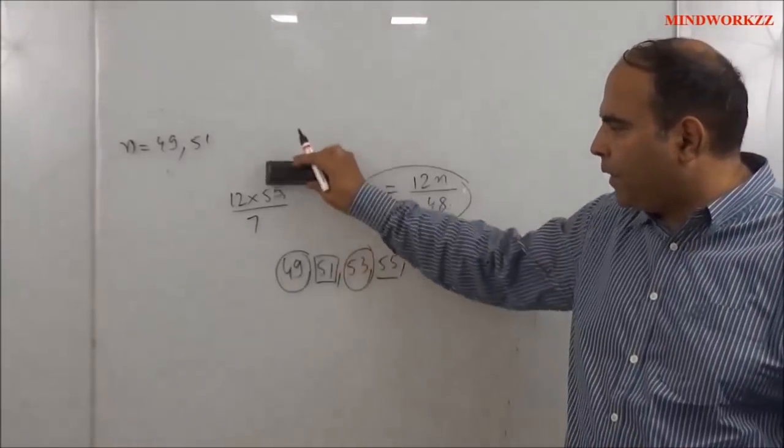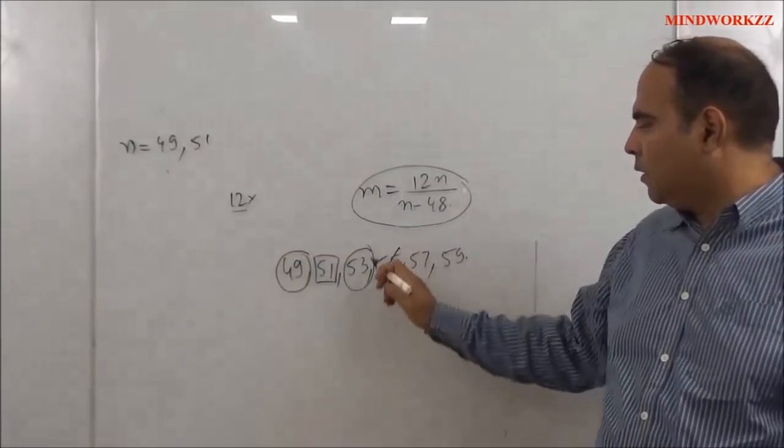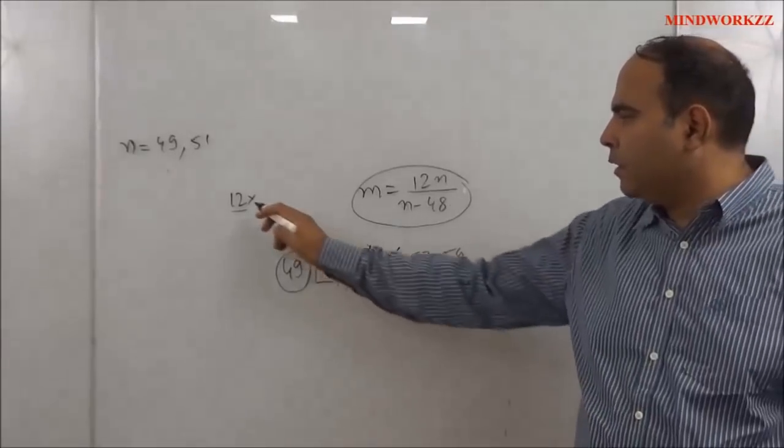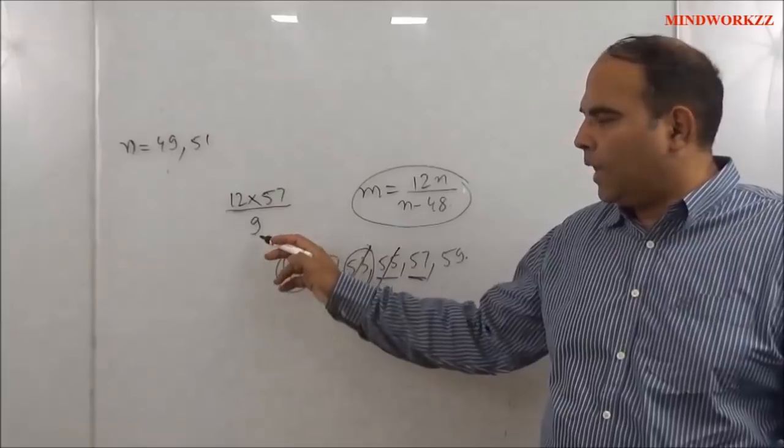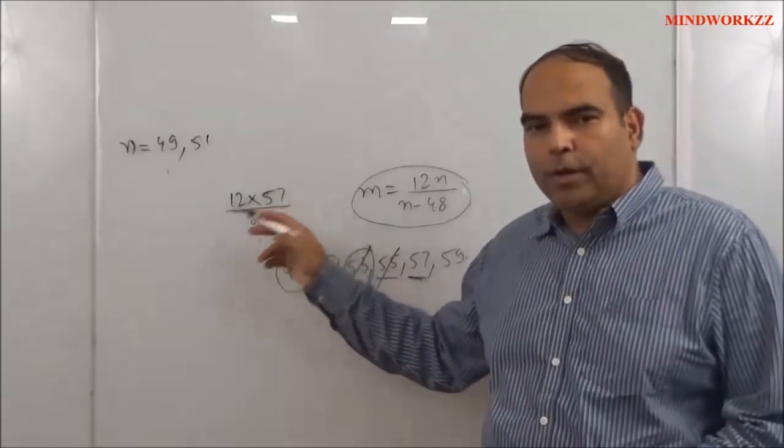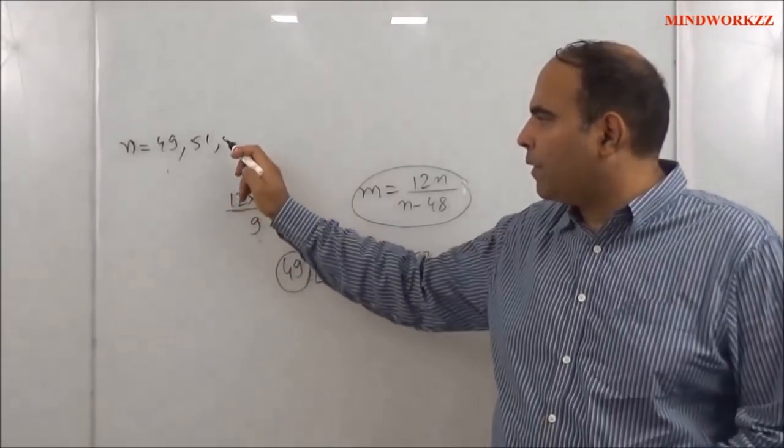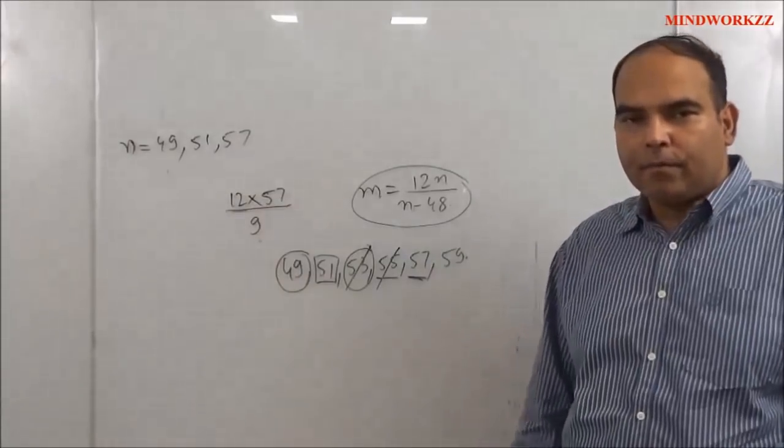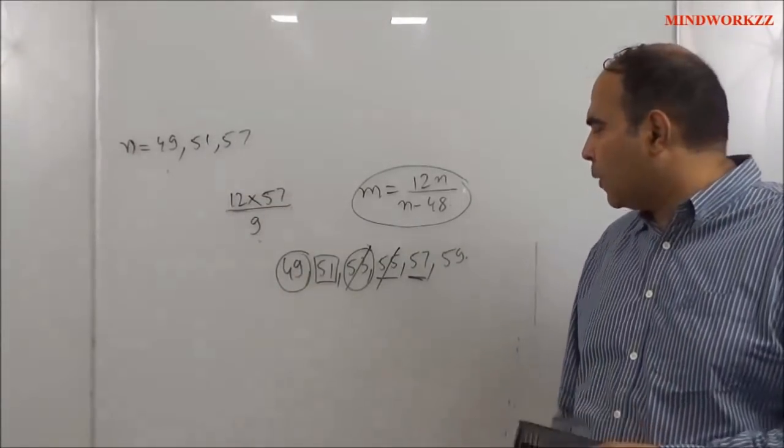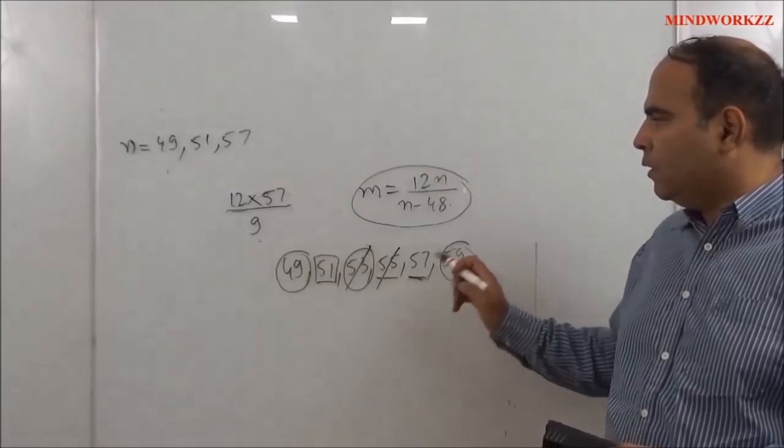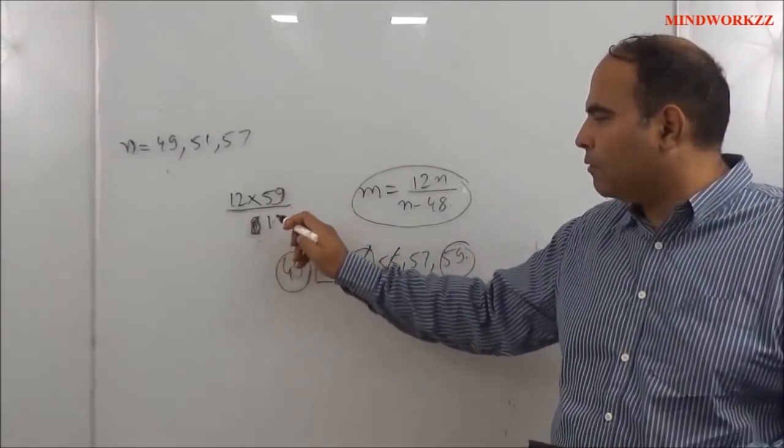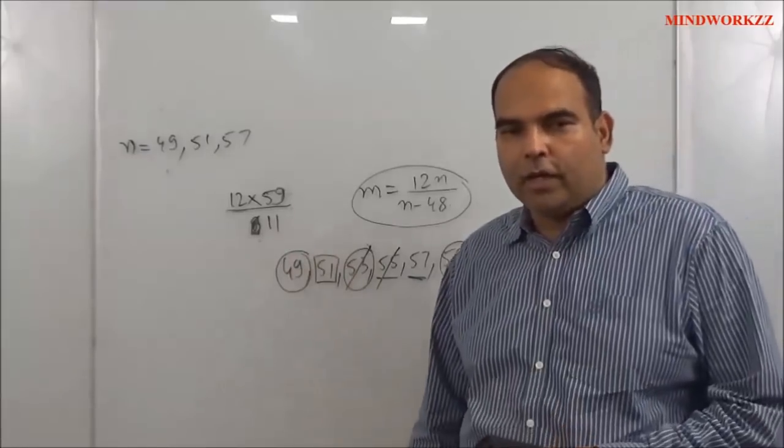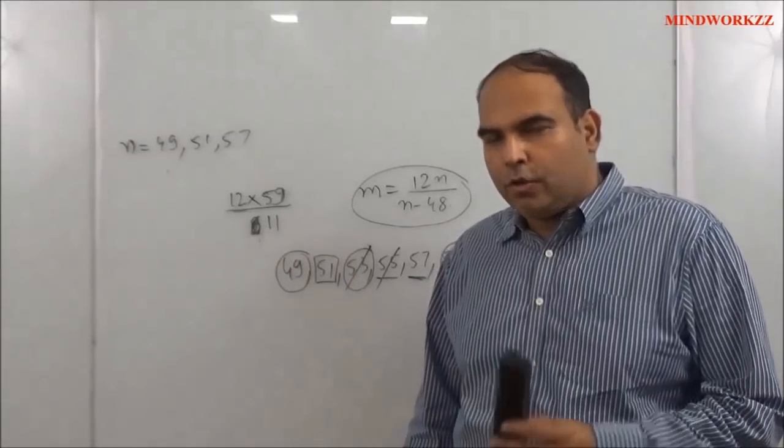With 57, you end up with 12 × 57 / 9, and 9 has two 3s and you have 3s in the numerator to cancel it out, so 57 is the third solution for m which will give you an integer value of m. And the last one: if you try 59, you can easily see that it's not going to work because the denominator gives me 11, which is not going to get deleted.